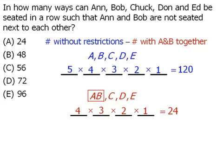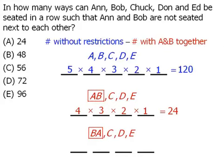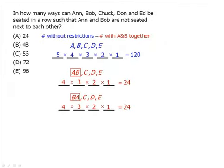What about the possibility that Bob is seated to the left of Ann? So we must also consider this arrangement. We'll take these 4 entities and seat them in 4 chairs. Using the same calculations we did earlier, the total number of ways to arrange these 4 entities will be 24 as well.